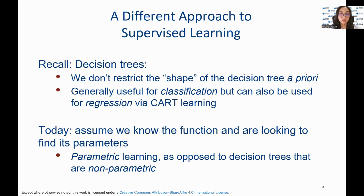First, recall that decision trees are typically used for classification, but could also be used for regression via CART learning, which stands for classification and regression tree in machine learning. Today we will be reviewing parametric learning, where we assume a known function and we are looking to find its parameters.